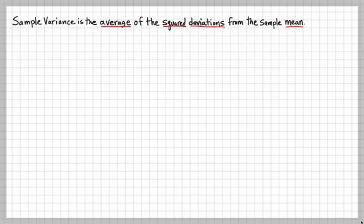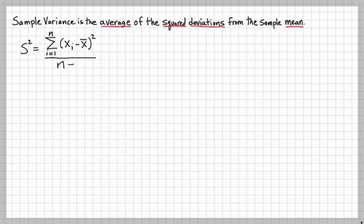The sample variance is represented as S² and is equal to the sum of the squared deviations from i equals 1 to n, divided by n minus 1. Here, Xi represents the data points and X̄ represents the mean. The deviation is squared — these are the squared deviations from the mean.